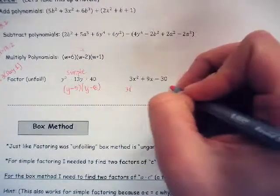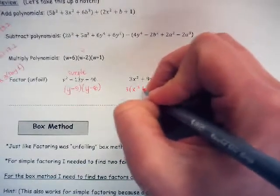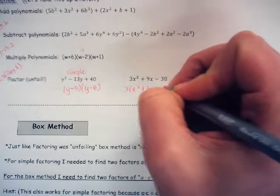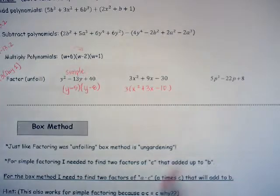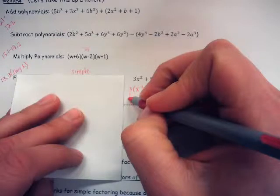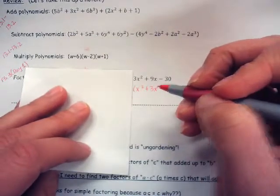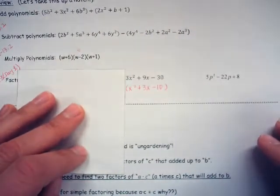If I pull a 3 out and divide every term by 3, I have x squared plus 3x minus 10. Now I can factor what's left on the inside. As I said in my last video, the 3 out front is like your friend at lunch that won't go away — we're going to ignore them, but they're still there.